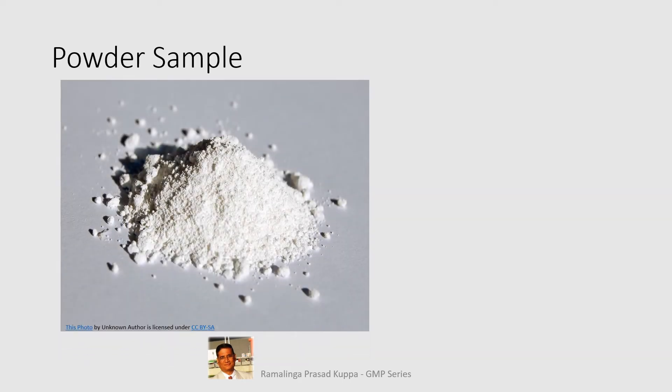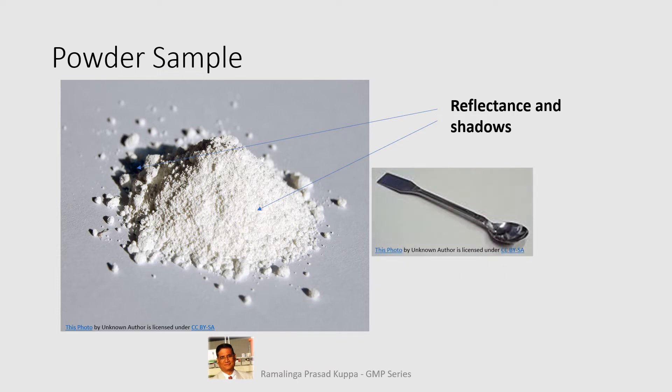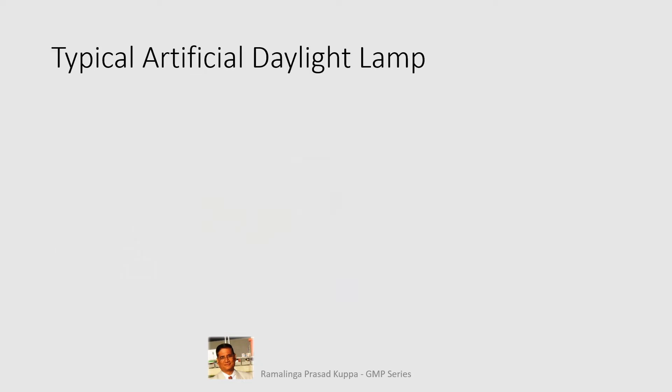For example, when powder is in a conical heap shape, it is irregular with reflectance and shadows throughout. Use the flat end of a spatula and press gently on top of the heap so that it becomes flat, without shadows and reflectance. Let us see a typical artificial daylight lamp.